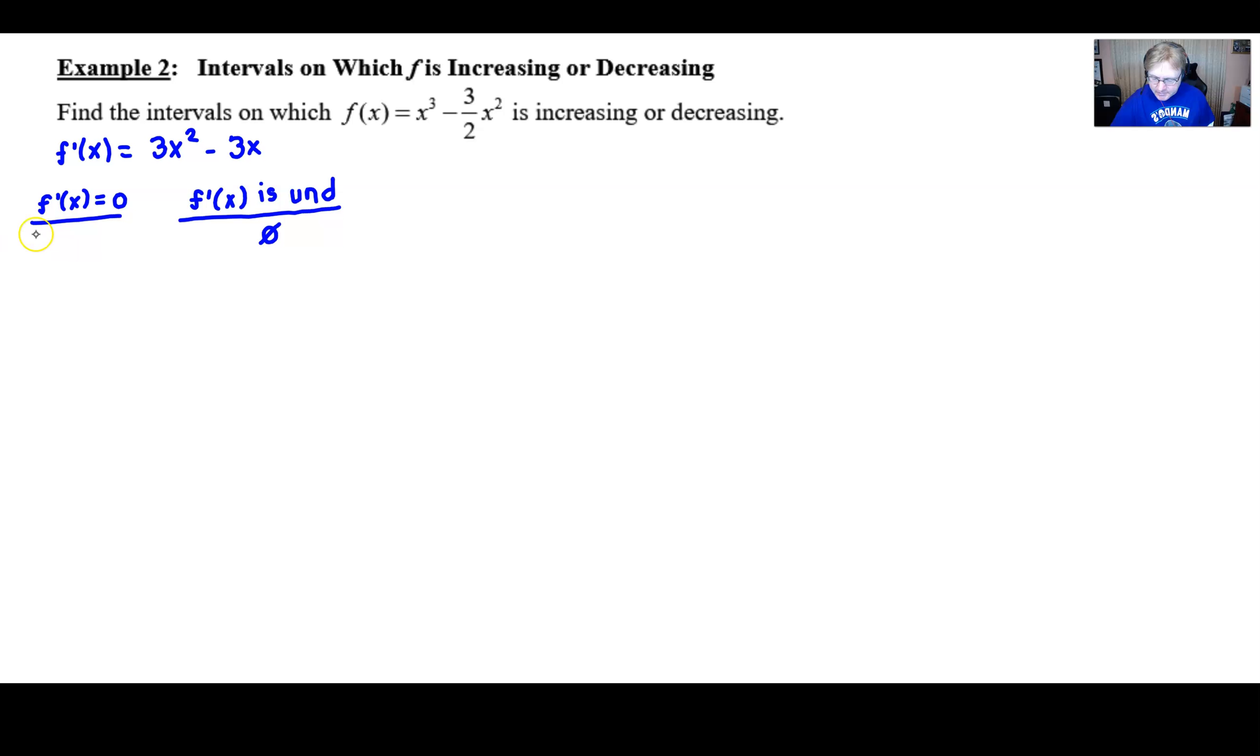Now the f' being zero, that's a little bit more interesting to us because we're going to go ahead and set this function equal to zero, and we can solve it by factoring. So you're going to do a little algebra here. If you factor out a 3x, you're going to end up with both zero and one as your critical values.